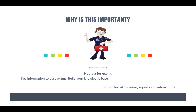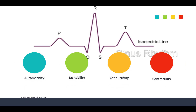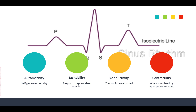Today I want to talk about electrophysiology. We're talking about automaticity — that self-generating electrical activity — things like excitability, the response to appropriate electrical stimulus, your conductivity, which is the transmission of the stimulus from cell to cell, and your contractility, which is when stimulated by the appropriate electrical stimulus. I'm sure you've heard a lot of these phrases already. This might be a little review, and I'm hoping it will solidify some more content and help you really master these basic key elements so that when you get deeper into the weeds, it's going to all click and pull together a little bit easier.